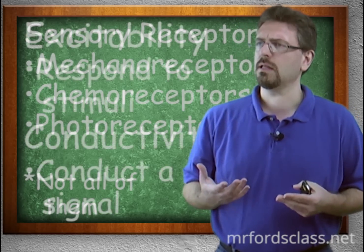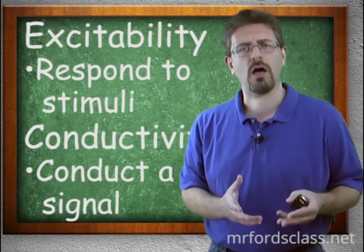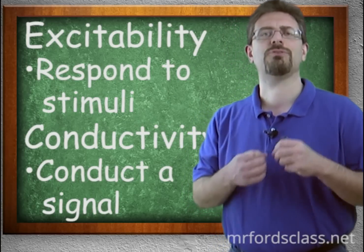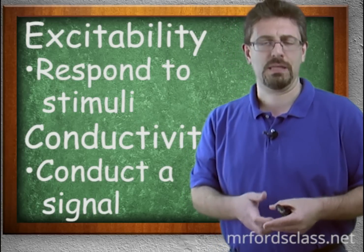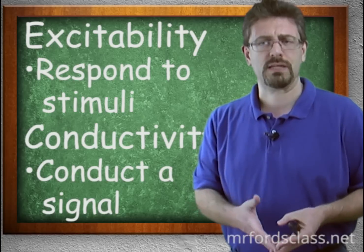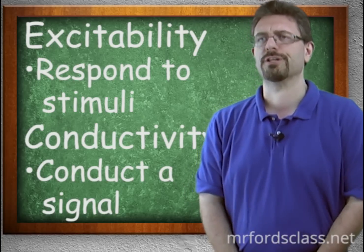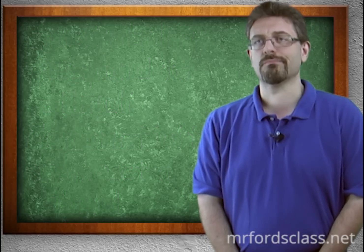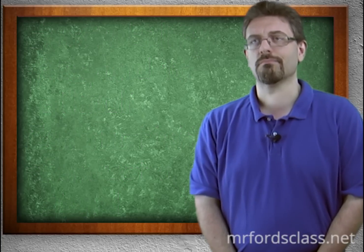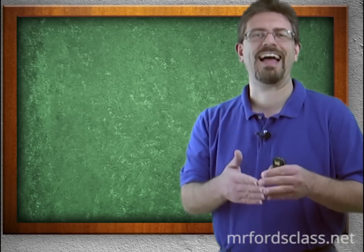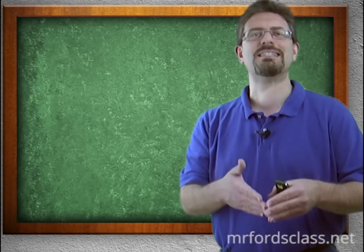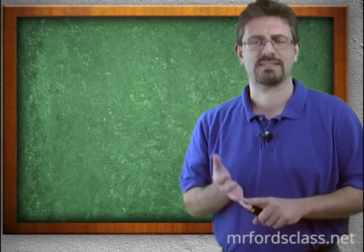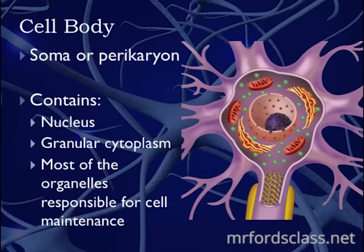These neurons must respond to a stimulus — they have to detect that something is going on and respond. And they have to be able to tell others about it. It would do no good if a nerve detected a light and didn't pass it on. It has to conduct that information along down its chain. So: excitable, and it has to conduct.